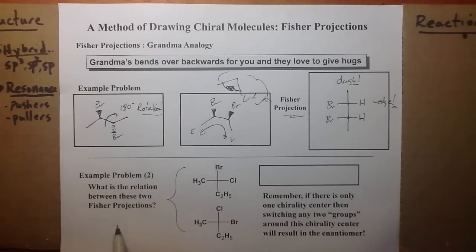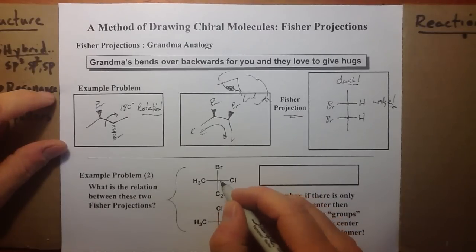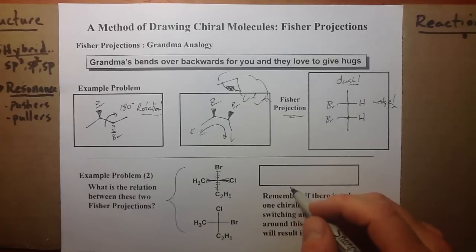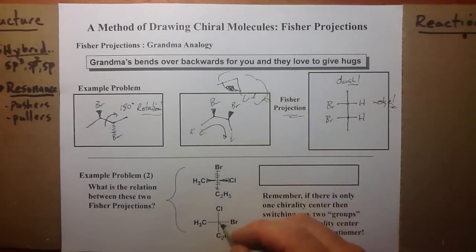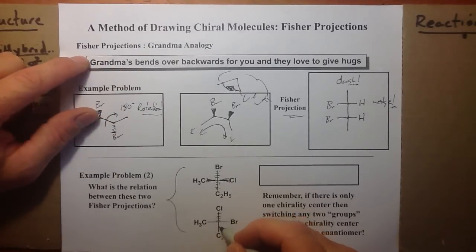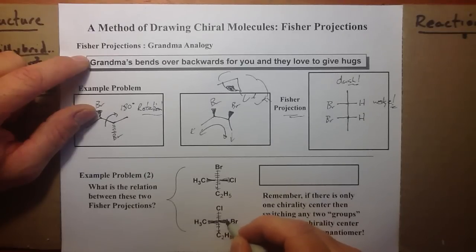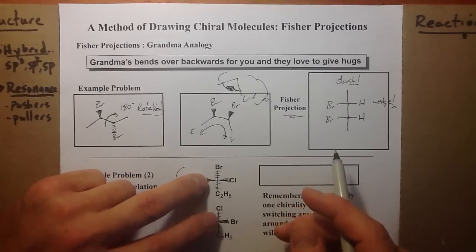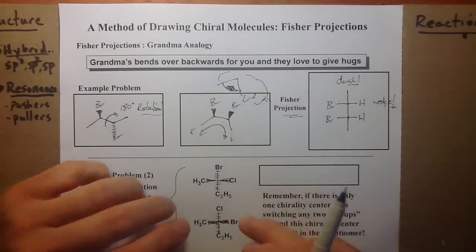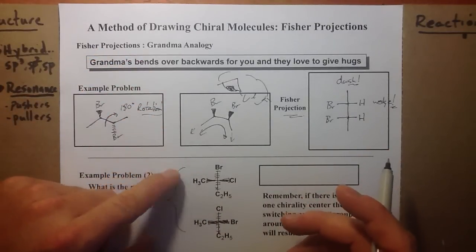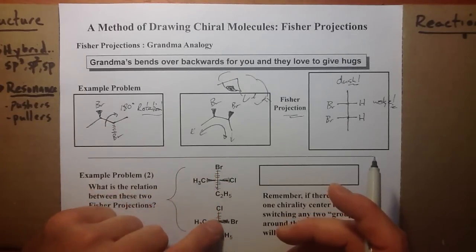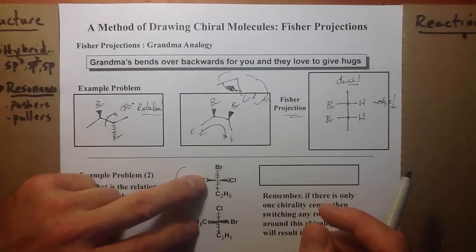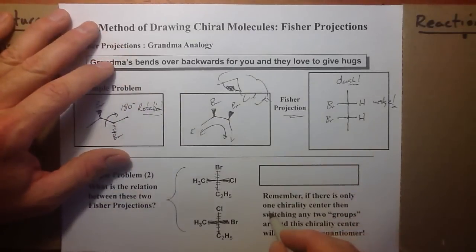What is the relationship between these two Fischer projections? Remember, these would be on the wedge and these would be on the dash. There's a trick if you only have one chirality center. Switching any two groups—if these structures have only one chirality center—if we can then superimpose it on this one, that indicates they have an enantiomeric relationship if you switch once. If you have to switch twice, they're the same compound.